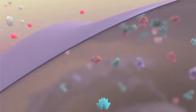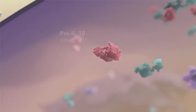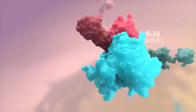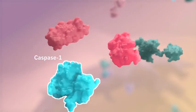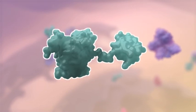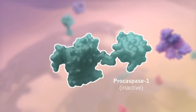Inside the cell, IL-1-beta is produced as a precursor molecule that remains inactive until cleaved by the enzyme caspase-1. Caspase-1 is also normally present as an inactive precursor molecule.